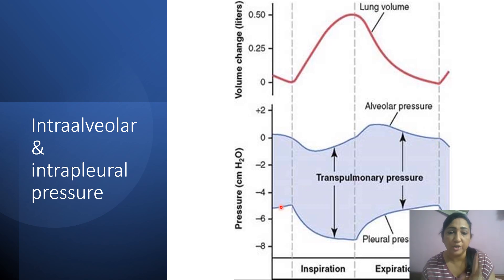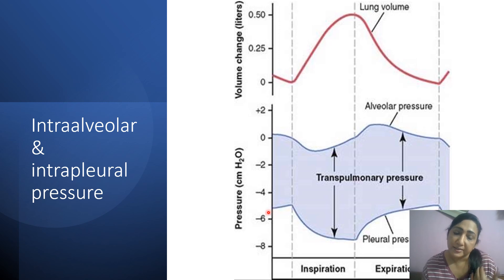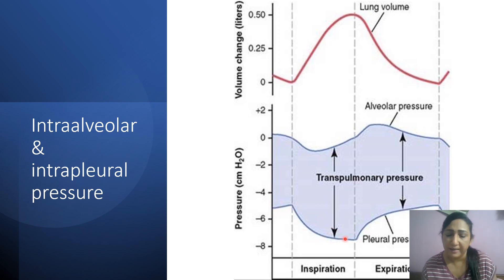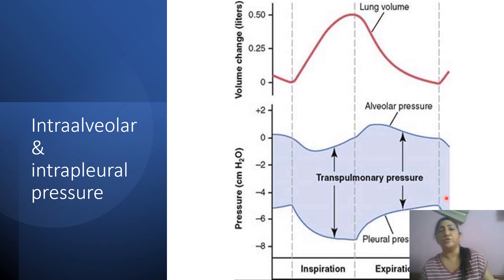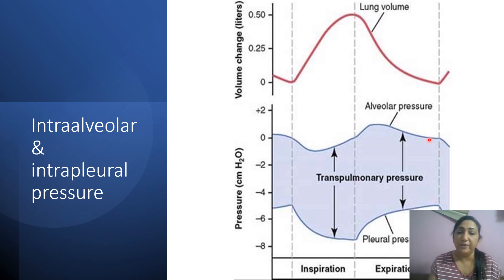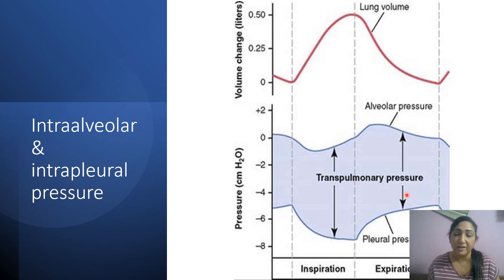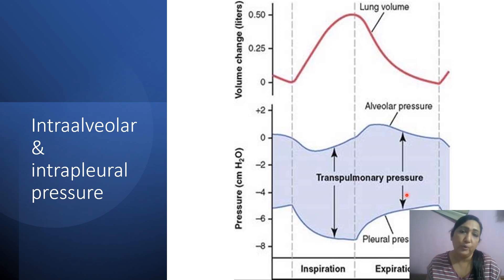In the case of intra-pleural pressure — the pressure between the two layers of the parietal and visceral pleura — this is always negative. It starts around minus 5 centimeters of water at the beginning of inspiration, goes below minus 7 centimeters of water, and at the end of expiration comes back to normal. The difference between alveolar pressure and pleural pressure is called trans-pulmonary pressure, which is always positive and is responsible for expansion of the lung, helping air to enter.